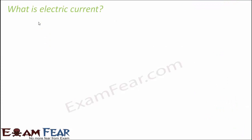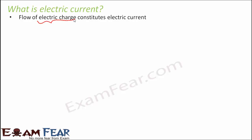So now let's understand what electric current is — it is the same electric current that makes the tube light turn on and the fan start when you switch it on. Electric current is nothing but the flow of electric charge. These electric charges are negatively charged particles called electrons. The movement of electrons results in electric current.